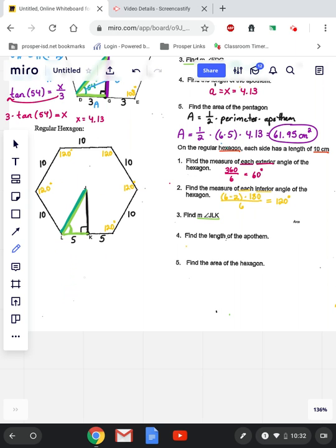However, this blue line is a radius, and it cuts that angle in half. So if I want to know what half of it is, I would do 120 divided by 2, which is 60 degrees.